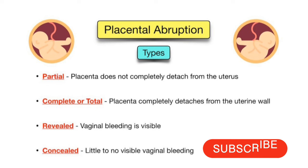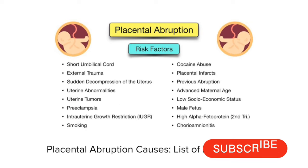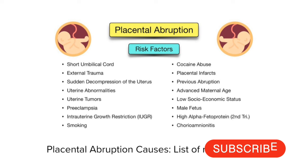The number one risk factor is maternal hypertension — maternal high blood pressure. Other risk factors include maternal age over 35 years or under 20 years, and a history of placental abruption in a previous pregnancy, which significantly raises the risk in subsequent pregnancies.